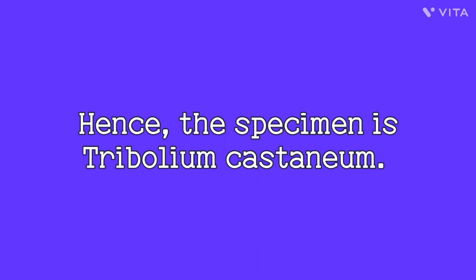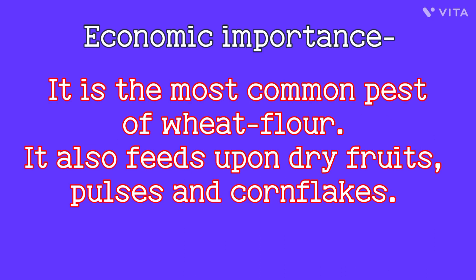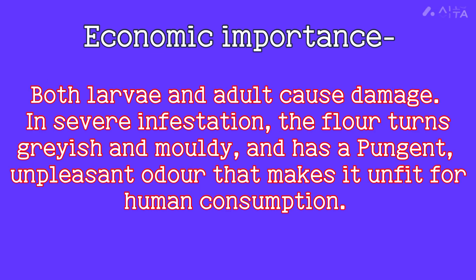Hence, the specimen is Tribolium castaneum. Economic importance: It is the most common pest of wheat flour. It also feeds upon dry fruits, pulses, and corn flakes. Both larvae and adults cause damage. In severe infestation, the flour turns grayish and moldy, and has a pungent, unpleasant odor that makes it unfit for human consumption.